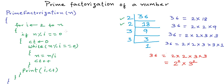Now what will be the time complexity here? What will be the running time of the algorithm? In the worst case, when n is prime, the for loop will run almost n times and the while loop will run only once. So clearly, the time taken will be proportional to n in the worst case.